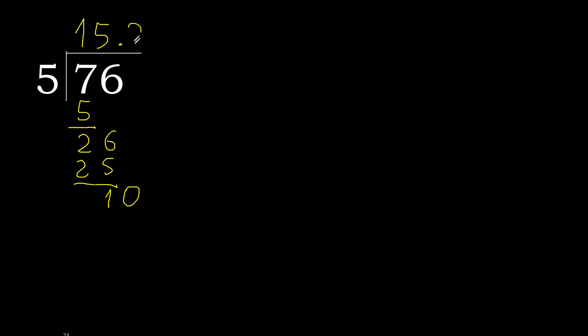5 multiplied by 2 is 10. 10 minus 10 is 0. Therefore we are finished.